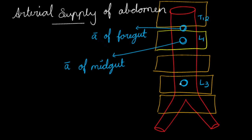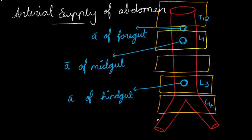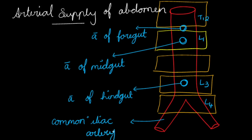Then the inferior mesenteric artery arises at the L3 vertebral level and is also called the artery of the hindgut. After that, the abdominal aorta bifurcates at the level of L4 — which is very important from an MCQ point of view — into the common iliac artery. All these vertebral levels are more and more important from an MCQ point of view.